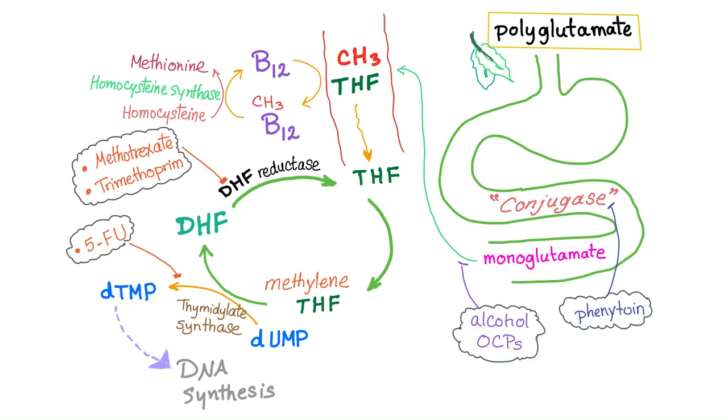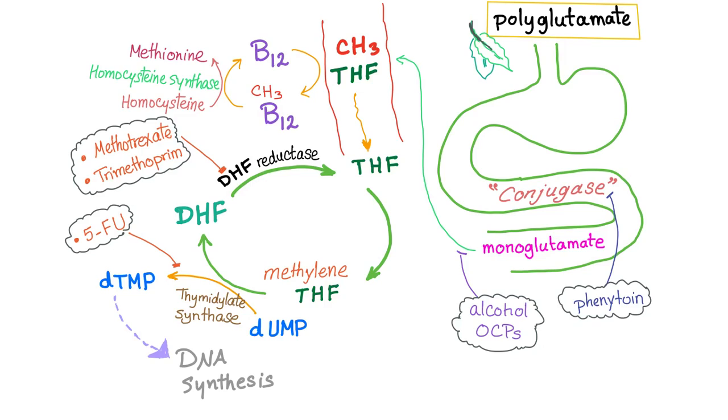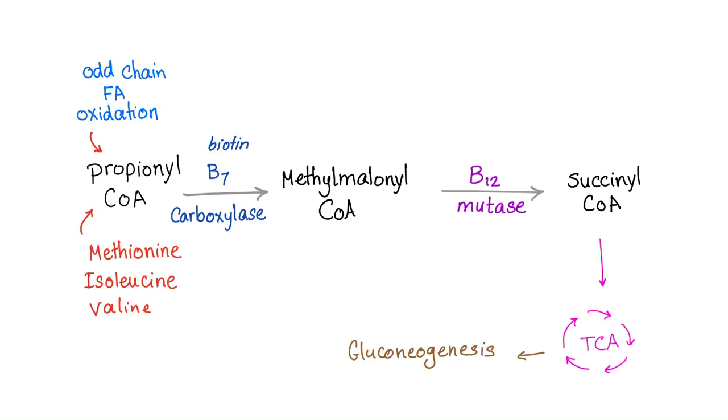If you remember the previous video on folate deficiency, we have talked about homocystinemia. So in order for folate to participate in DNA synthesis, it had to get rid of the methyl group on the vitamin B12, which gets rid of the methyl group on the homocysteine. Homocysteine plus methyl equals methionine. So symptoms will include homocystinemia. Please go ahead and watch the previous video if you'd like to know more about folate.